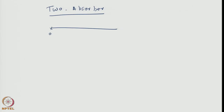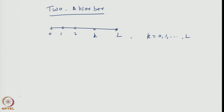The two-absorber problem means we have a lattice with point 0 at one end and point L at the maximum, with lattice points generally labeled k, where k ranges from 0 to L as integers. Both point L and point 0 are absorbers, and this problem is of considerable importance.